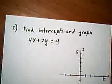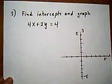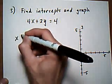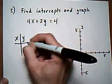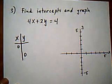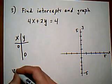Find intercepts and graph. 4x plus 2y equals 4. We can use the exact same approach. Make a chart. x, y. 0 for x, find y. 0 for y, find x.